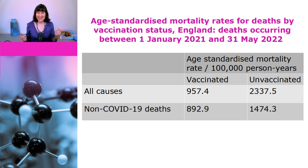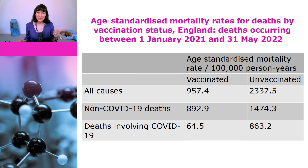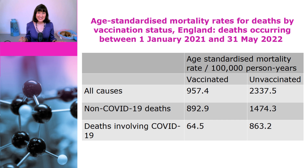And I will be discussing later in the video why we see more deaths amongst the unvaccinated, even for deaths that don't involve COVID. And for completeness, these are the mortality rates for deaths involving COVID. Unsurprisingly, they are considerably higher in the unvaccinated at 863.2 per 100,000 person years than the vaccinated at 64.5. So despite the claims of grifters, the evidence makes it very clear that the vaccines are not responsible for the excess deaths.